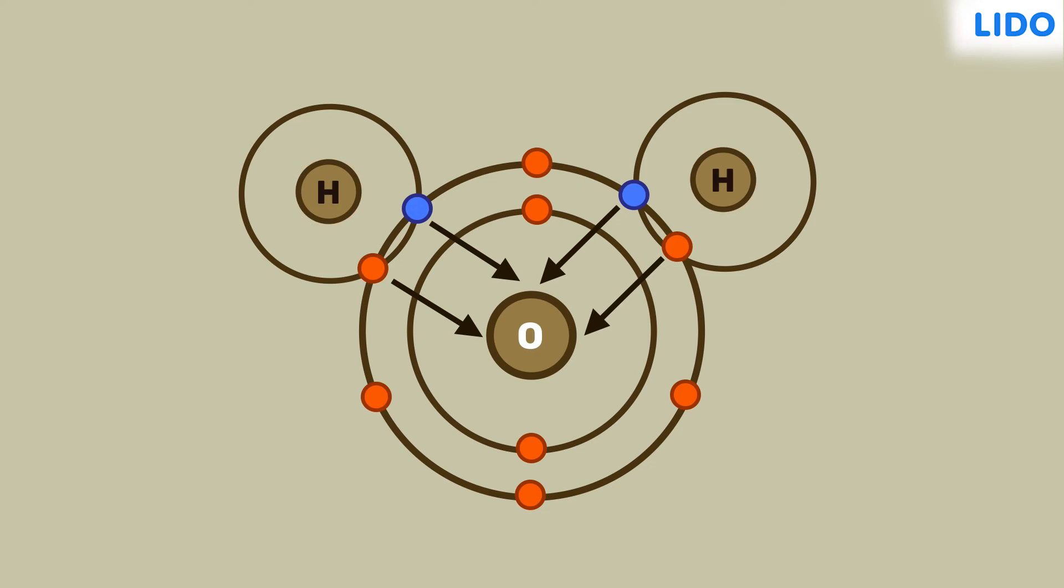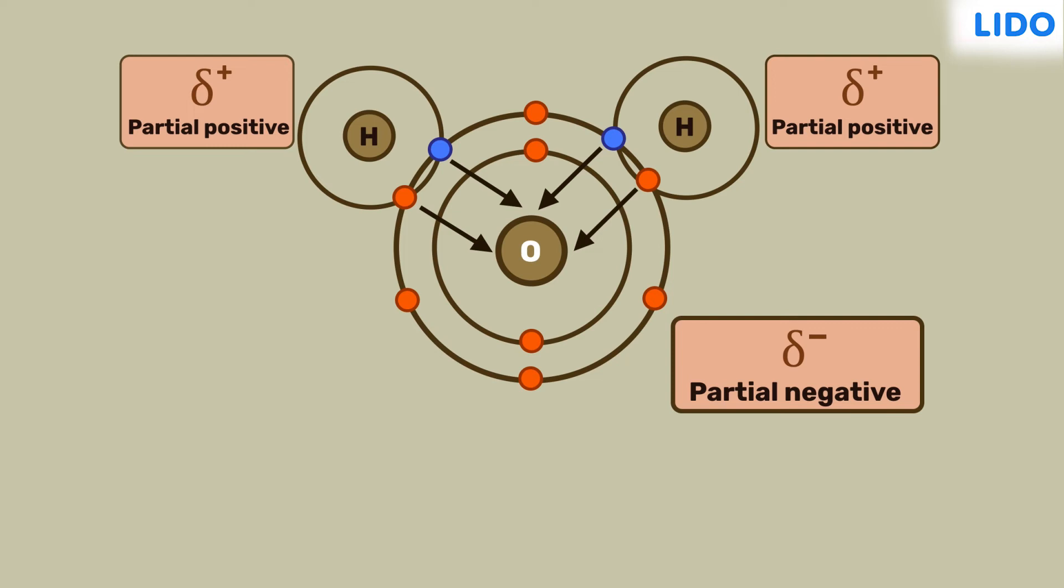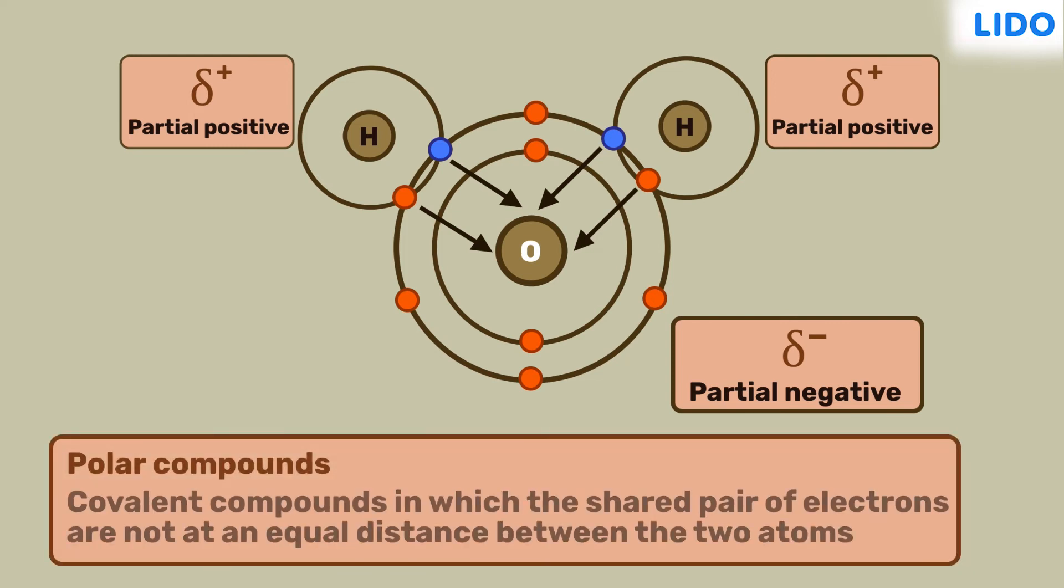As a result of this, oxygen becomes partially negative and hydrogen becomes partially positive. There is a formation of two opposite poles in the molecule. Hence, this molecule is called a polar compound, a compound formed due to the unequal distance of the shared pair of electrons between the two atoms.